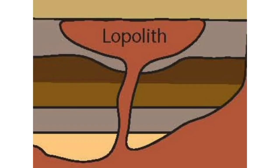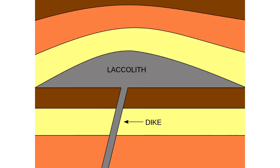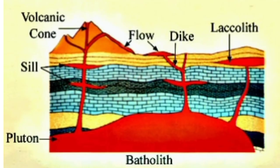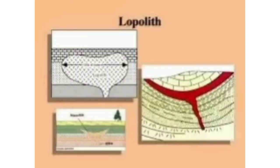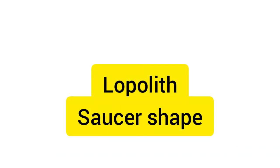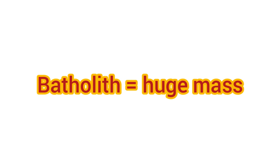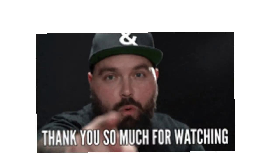These are the basic differences between laccolith, lopolith, phacolith, and batholith. They lie below the earth's surface, so they are not easy to observe directly, but they can be identified from an image by their shapes. To summarize: laccolith is dome-shaped, lopolith is saucer-shaped, phacolith is lens-shaped, and batholith is a huge mass lying at the base.